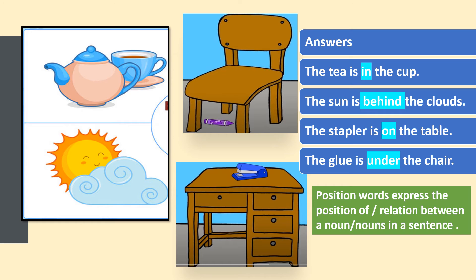In the next sentence, stapler and table are the nouns. The position word 'on' is telling us the position of the stapler, and it is also telling us the relation between the stapler and the table.